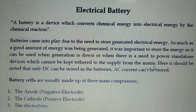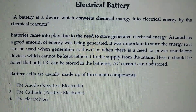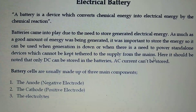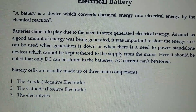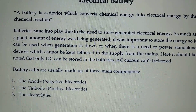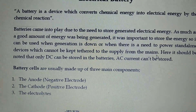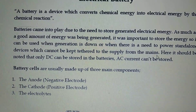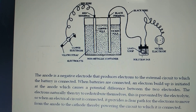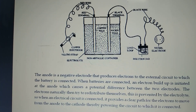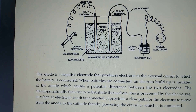Battery cells are usually made up of three main components. The three components are: the anode, which is used as a negative electrode; the cathode, which is used as a positive electrode; and the electrolyte. This diagram of a battery shows two poles — one acting as a negative electrode and the other as a positive electrode.